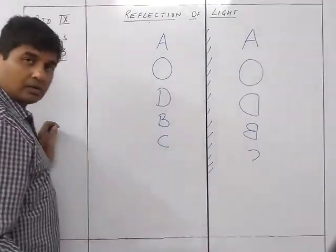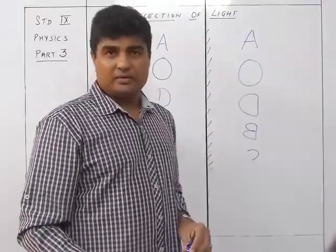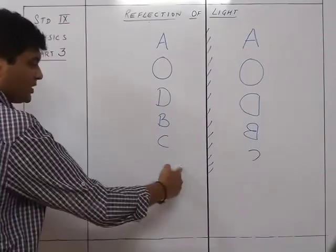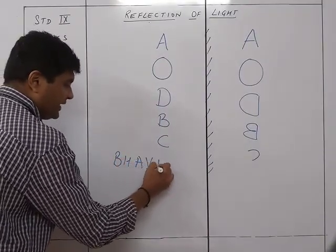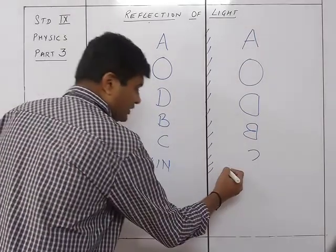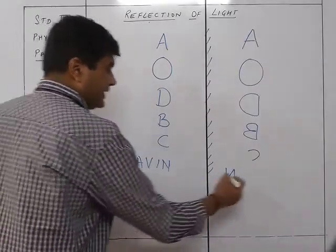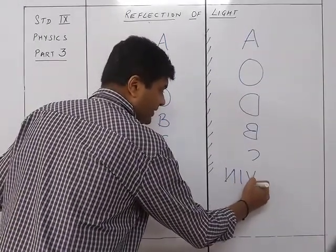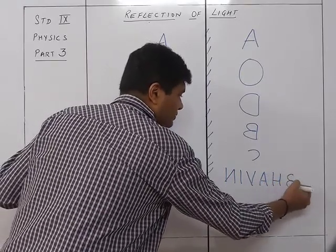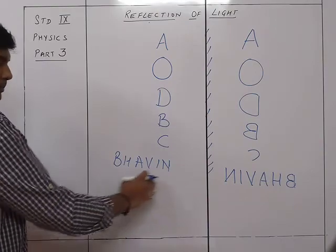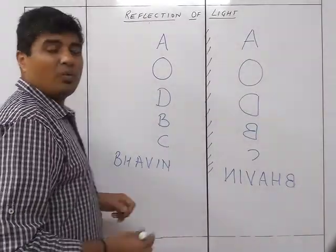Let's take the name 'Bhavin' as an example. Writing it in front of a mirror, N comes first and appears inverted. I remains the same, V remains the same, A remains the same, H remains the same, but B changes to its laterally inverted form. So 'Bhavin' becomes a laterally inverted image in the mirror.